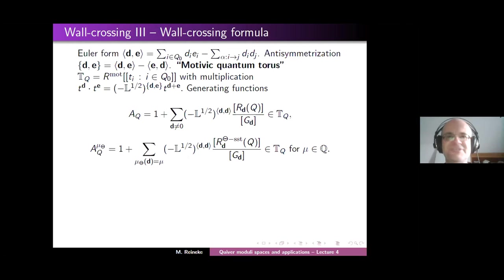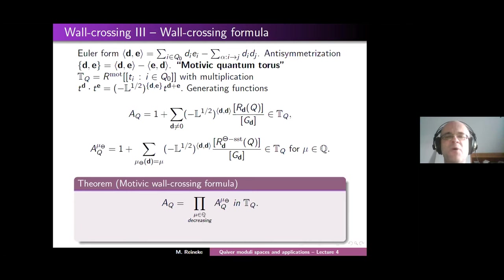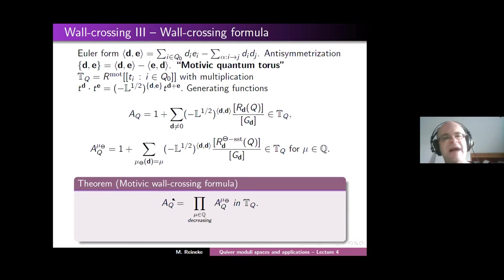With the aid of these generating functions, we can now formulate the motivic wall-crossing formula. And here it is — it looks much nicer than the Harder-Narasimhan recursion from the slide before. The motivic wall-crossing formula just says this formal series summing up all the quotient motives is the product over all the rationals in decreasing order of the local variants. So we just have a certain function A encoding all representations, and we factor it into a huge infinite ordered product over the rationals of functions encoding all the semi-stable representations.